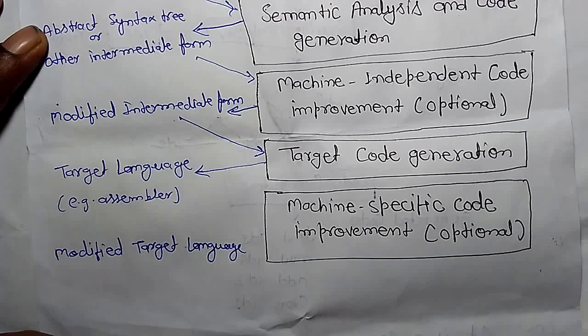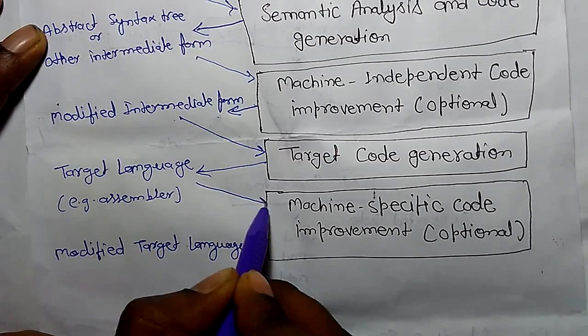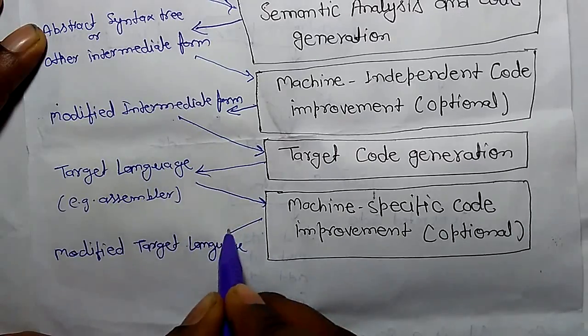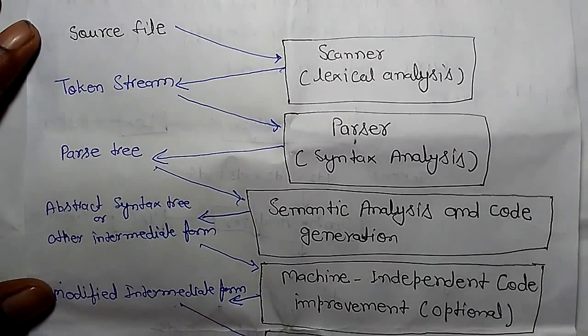This modified intermediate form we use to generate a target language from target code generator. There is another form, machine specific code improvement, we can also do it, it is optional. In this way your language processes.